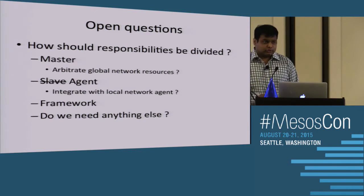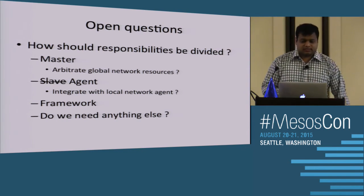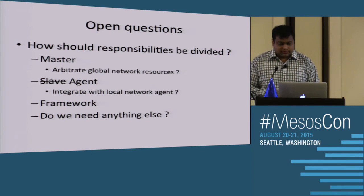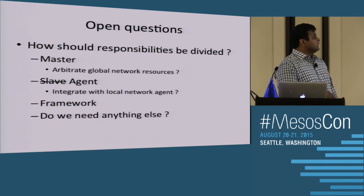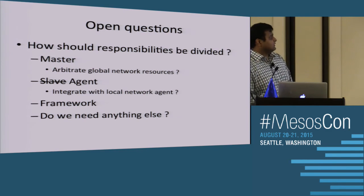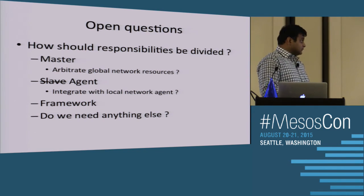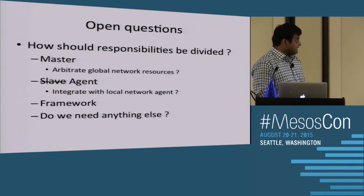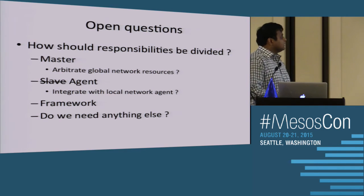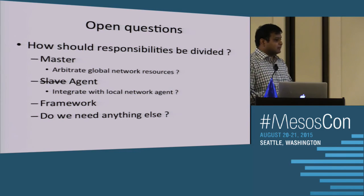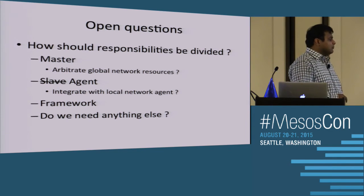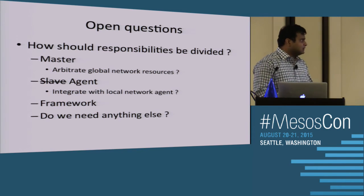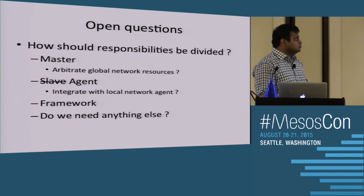Third: what information should flow between Mesos and the network virtualization infrastructure, and vice versa? There's a lot happening at the network layer that is of great potential value to Mesos, the scheduler, and the apps. And on the other hand, there's a lot the higher layers know that the network virtualization system needs to know — going back to the fact that communication is a joint goal, and different parties bring different perspectives. Other open questions: how should responsibilities be divided among Mesos components? What should the master do — just arbitrate global resources? What role does the agent play? What part do frameworks play, and could you just do it at the framework level?